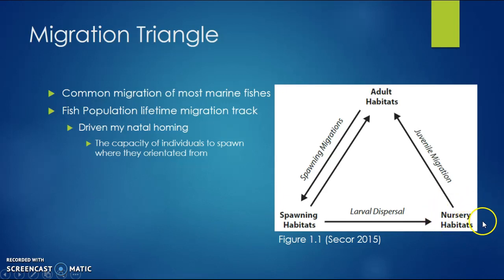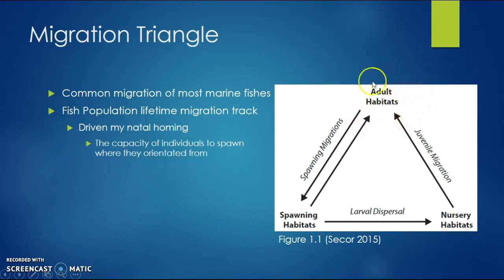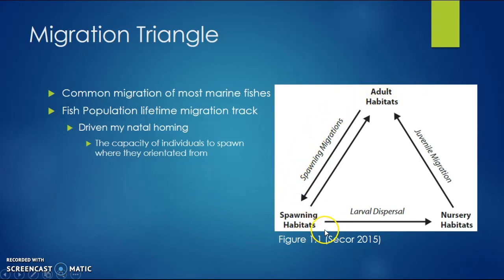At the nursery habitat, they will grow and then have their juvenile migration where they migrate to an adult habitat. At the adult habitat, they will live their life and then make back-and-forth spawning migrations — going to the spawning habitat where they were originally spawned, and migrating back to their adult habitat where they forage.